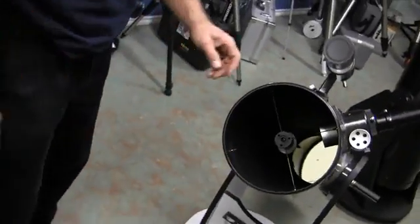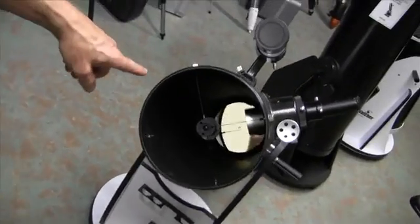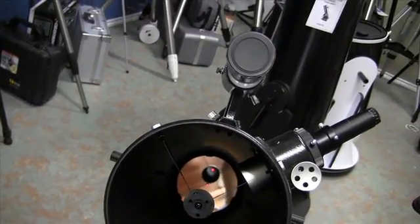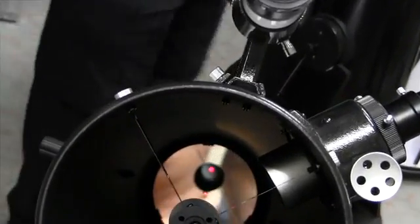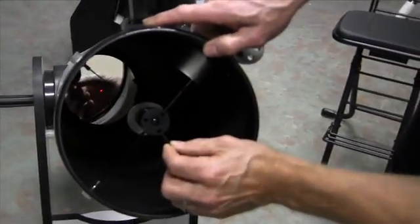We take a look down the tube and we see the laser is hitting the mirror just on the side of the dot that's marked on the bottom of the mirror. So we take the smaller of the two Allen keys that come with the telescope and we start to move that laser around.